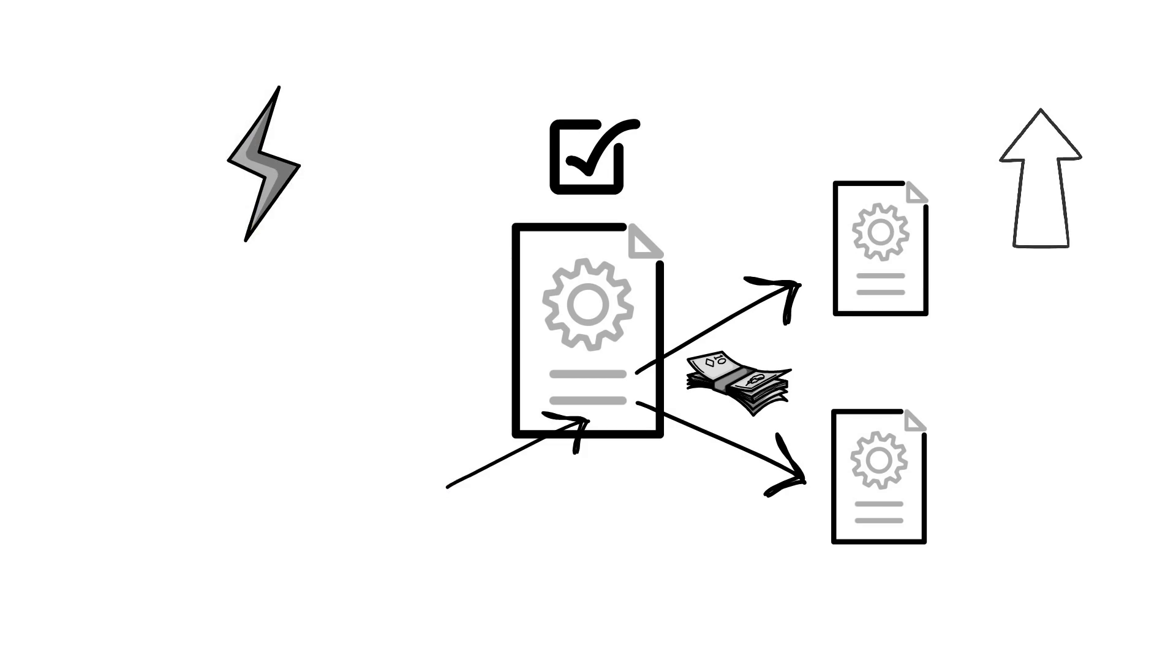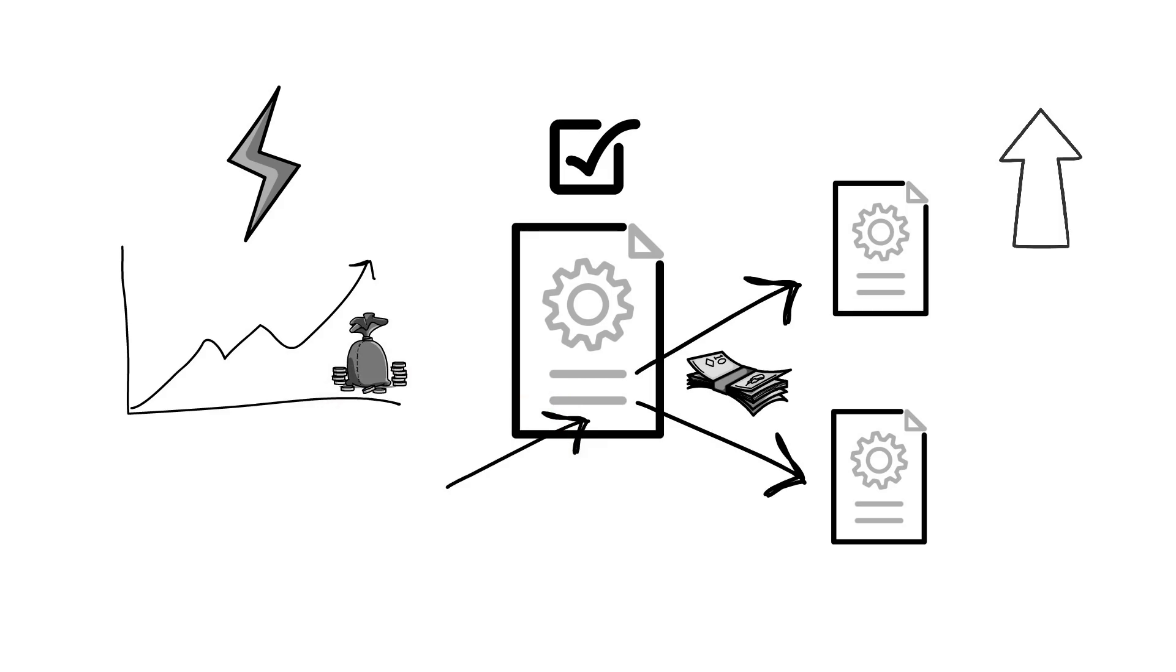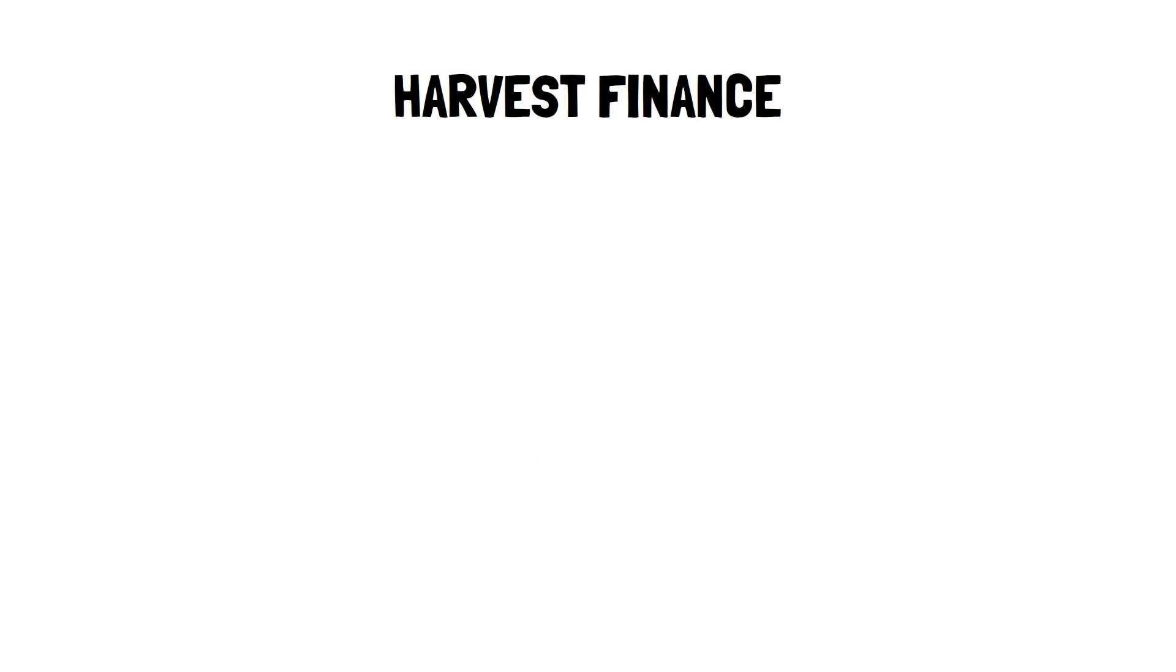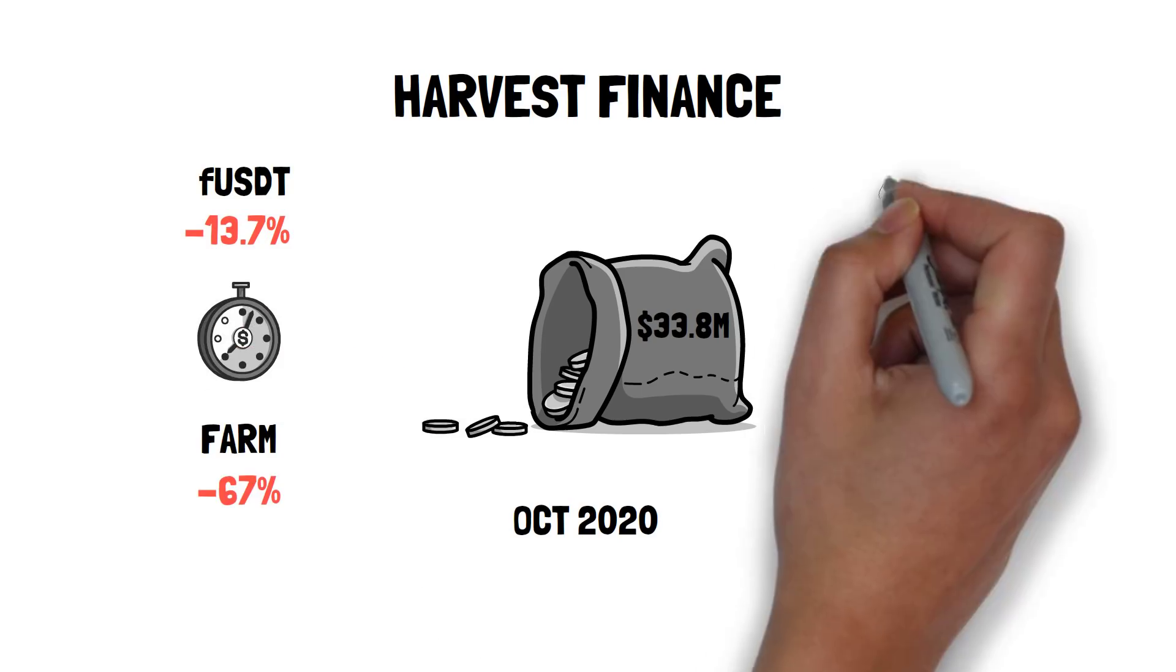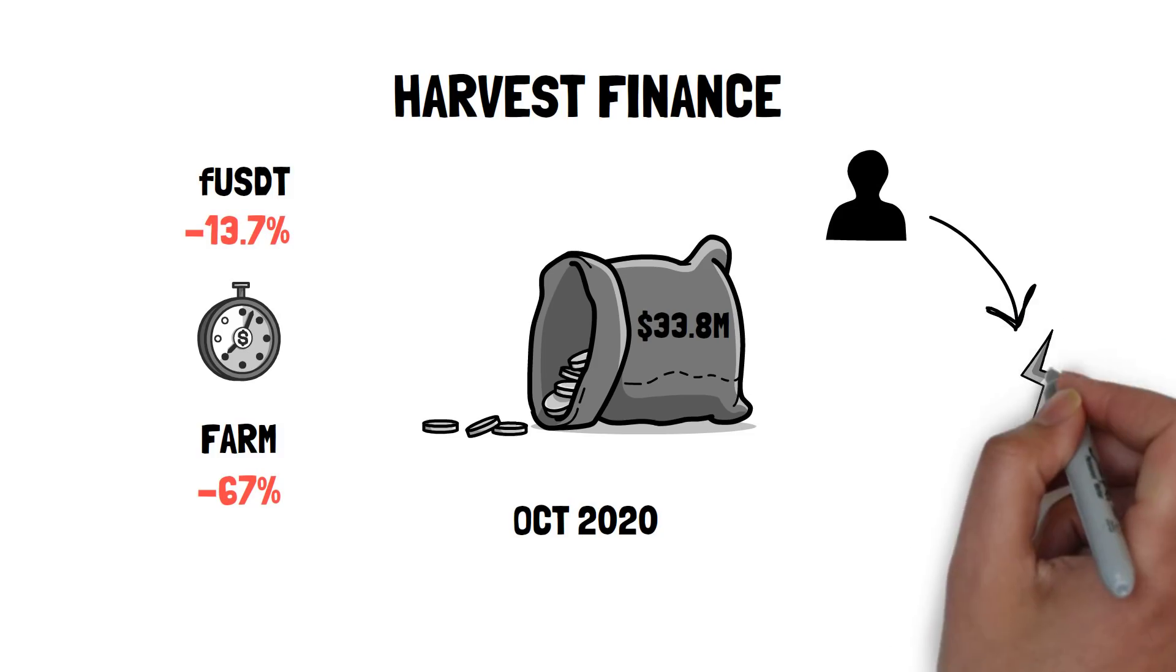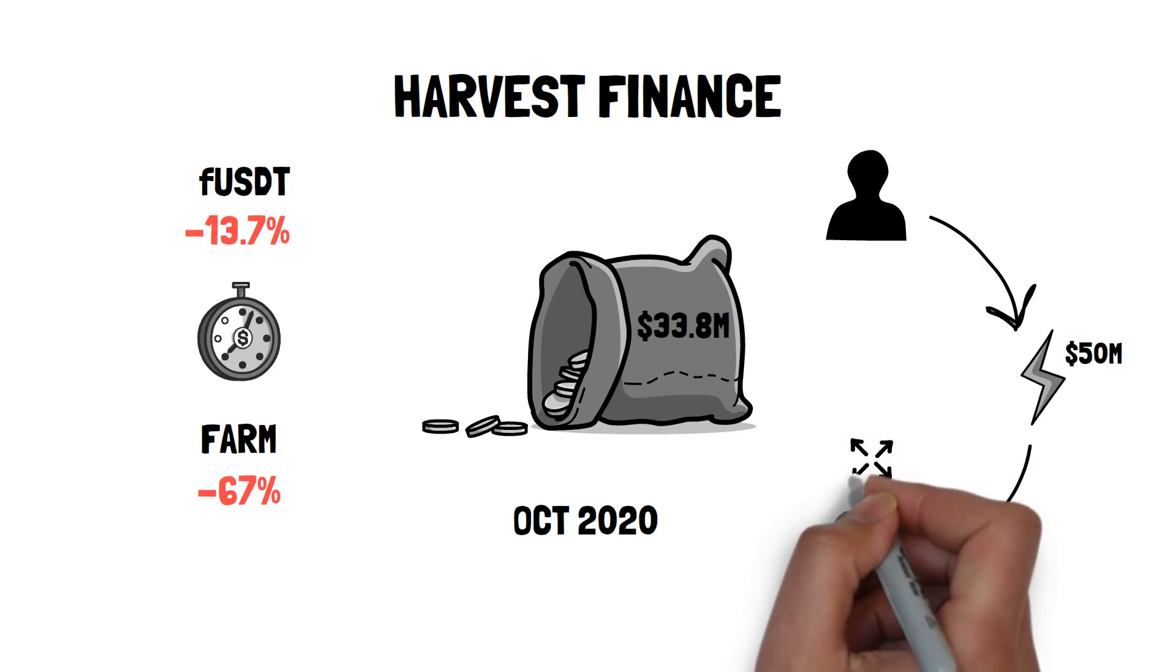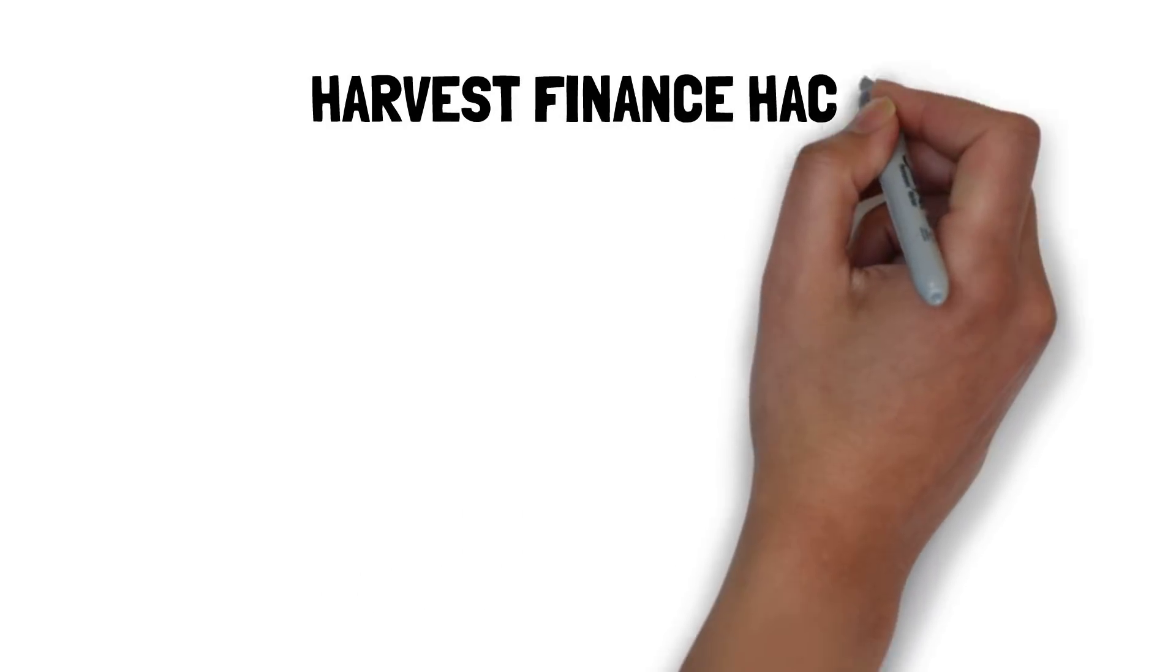Most flash loan attacks involve the manipulation of the token price using a large amount of capital. One example of a major flash loan attack would be Harvest Finance, who lost $33.8 million to an attacker in October of 2020. FUSD fell 13.7% and the FARM token fell 67% over 2 hours as the hacker took out a $50 million USDT flash loan, then used the Curve Finance Y-Pool to swap funds and stretch stablecoin prices out of proportion.